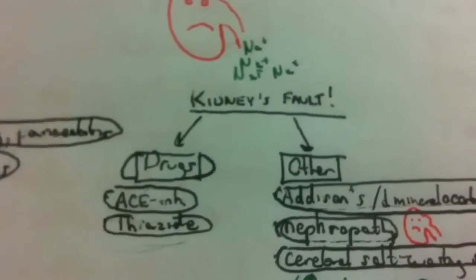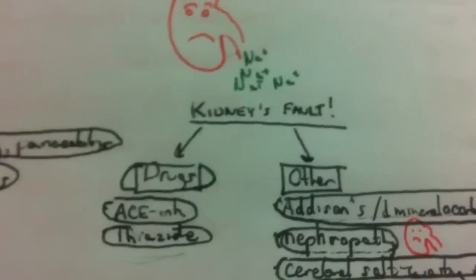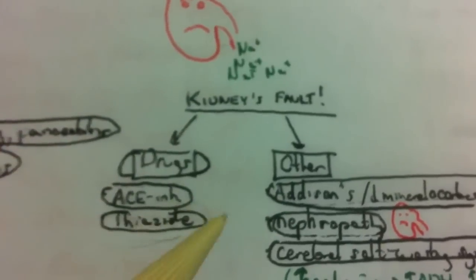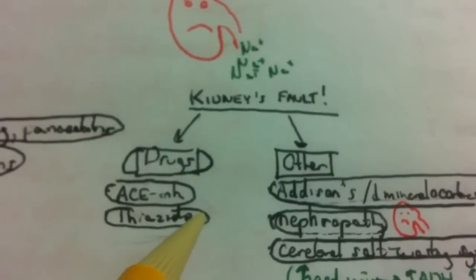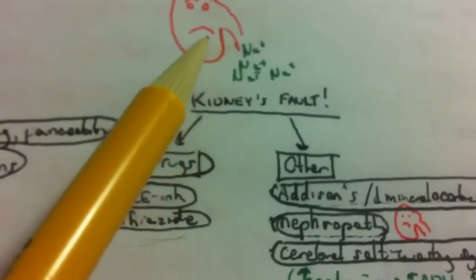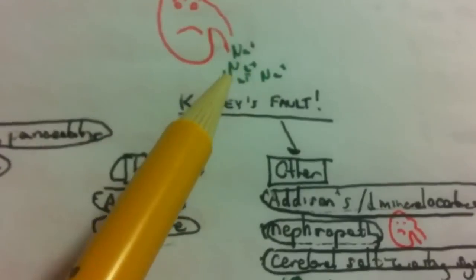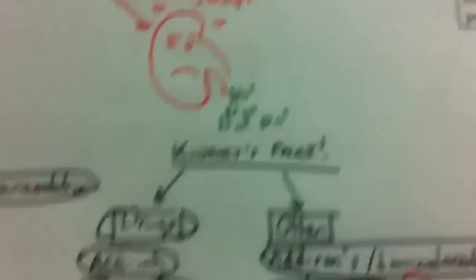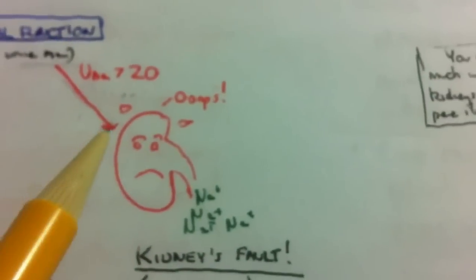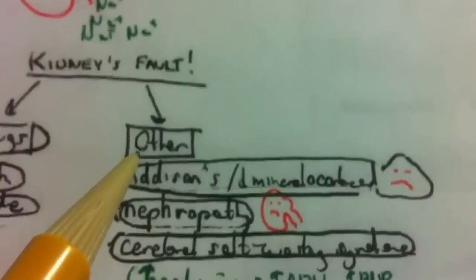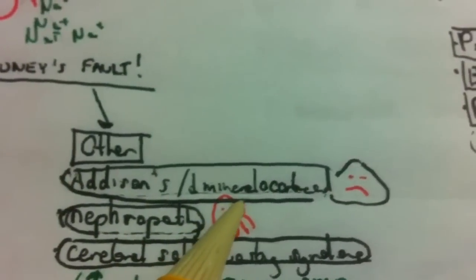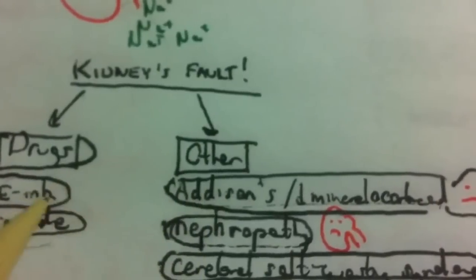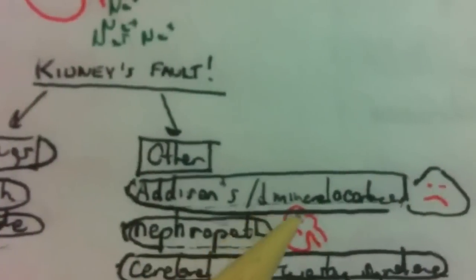Thiazides also cause a decrease in sodium absorption in the distal tubule, so you get some sodium loss there, which can contribute.